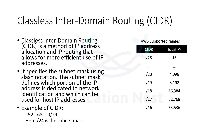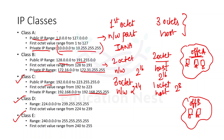The next topic that we are going to discuss is CIDR, that is classless inter-domain routing. Now the previous one, the classes that we discussed, this is called classful IP addressing.